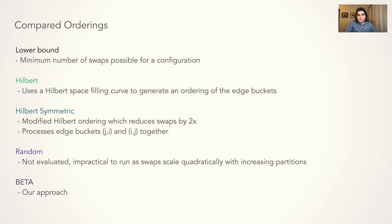Next, we evaluate the performance of the BETA ordering against multiple orderings. The first, the lower bound, is not actually an ordering, but it does denote the minimum number of swaps, which we can then use to infer the minimum amount of I/O that is to be performed. Next, we compare against two space-filling curve approaches: Hilbert, which applies a space-filling curve directly over the edge buckets to produce an ordering.